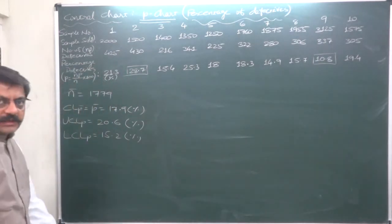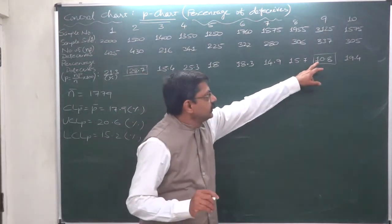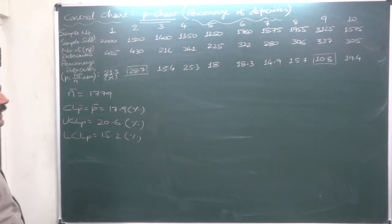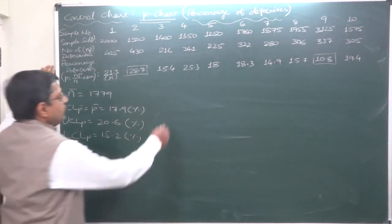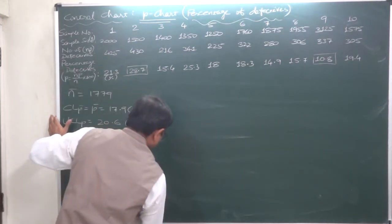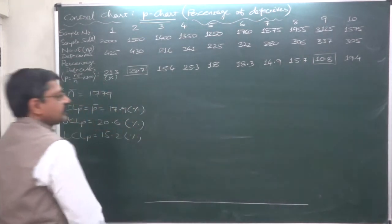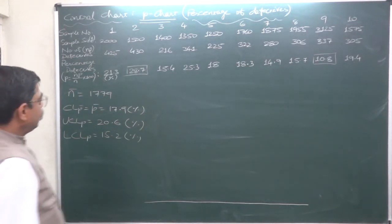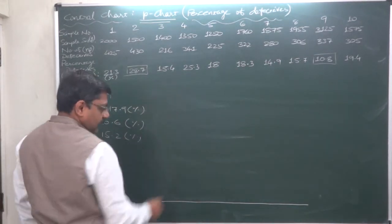Now we have ten samples, so on the x-axis it will be very easy to plot all the ten samples. But for the y-axis, the lowest value we need is 10.8 and the highest value we need is 28.7. So we shall have to pull the y-axis and we shall start writing from 10 to 29.